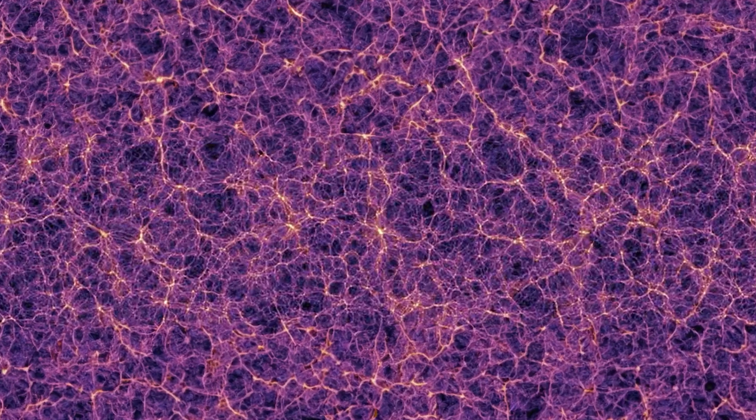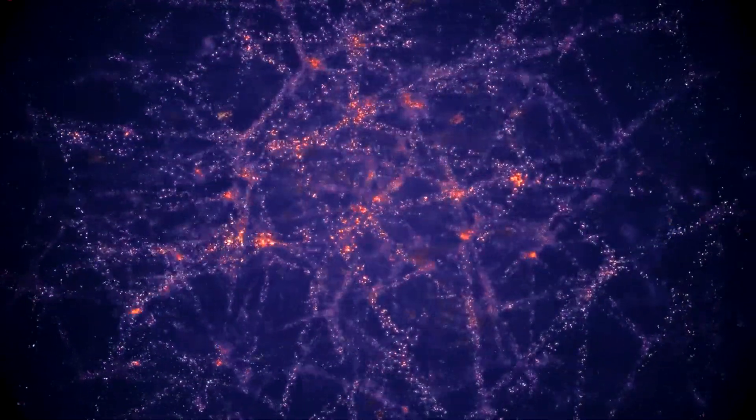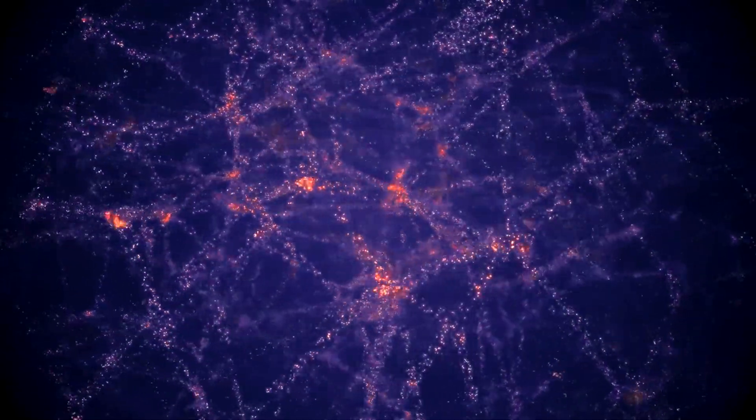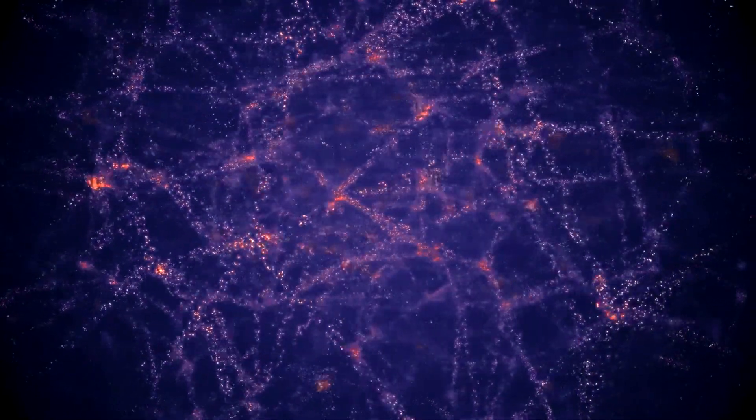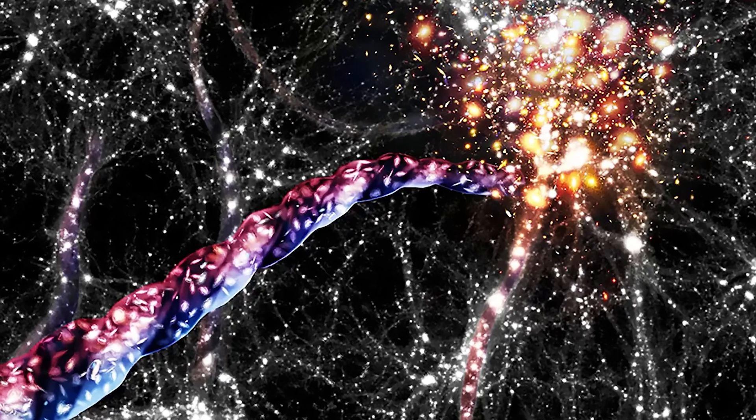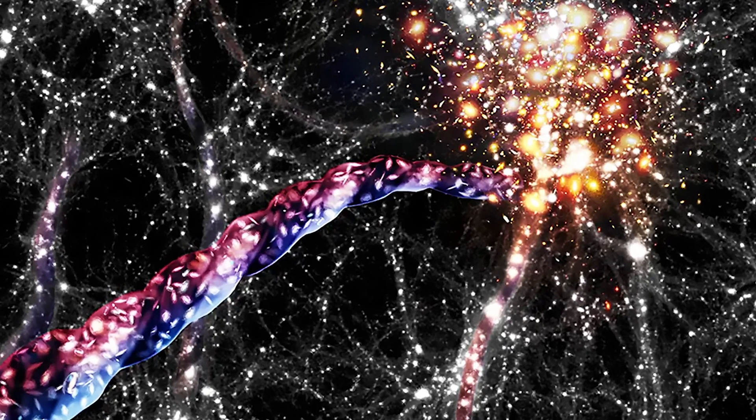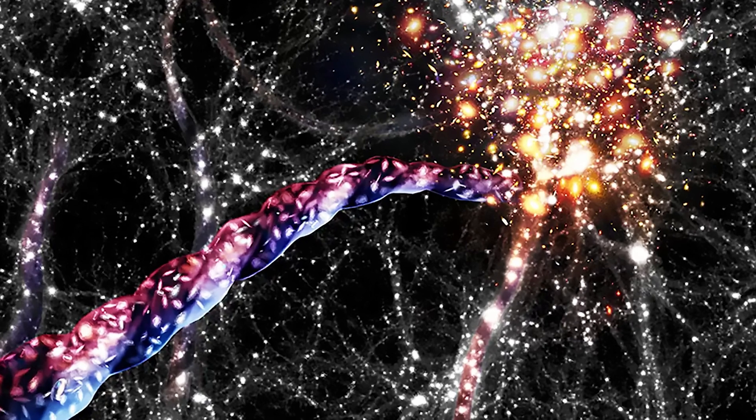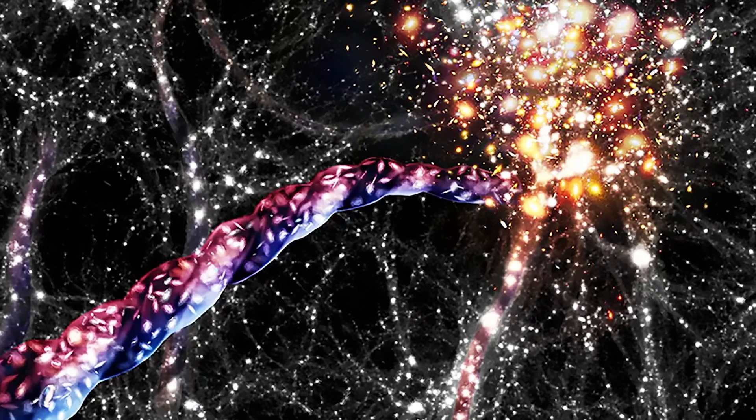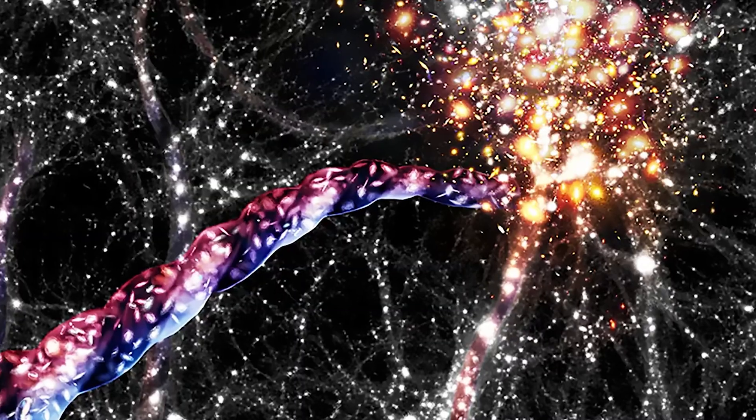Another theory suggests that the Boötes void is a natural creation based on the structure of the cosmic web. When the universe is viewed on a massive scale, we see a massive three-dimensional web of galaxy clusters connected by filaments of dark matter and gas. In between these filaments are voids that seem to naturally occur. The Boötes void could be an extreme outlier, a freak of nature. A place where the filaments of the cosmic web never formed properly, resulting in a vast region of emptiness.